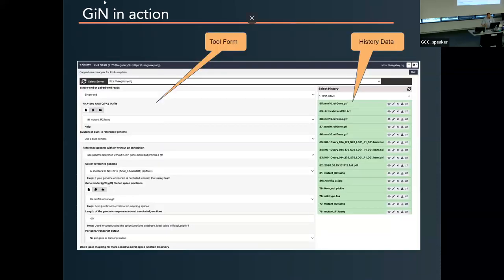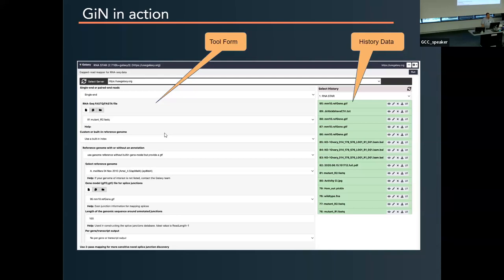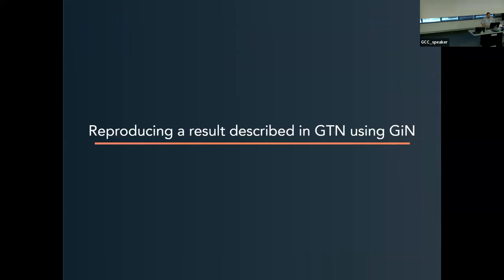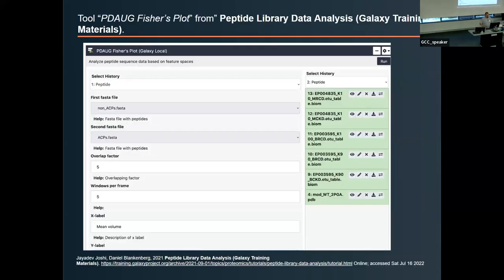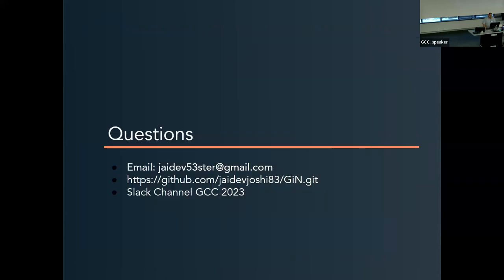Once you click on a tool, a new cell will appear inside the Jupyter Notebook itself. We have a very similar-looking tool form inside of Galaxy. We have our histories, we can switch between histories, configure our tools, drag and drop between our history and the Galaxy tool inside of Jupyter Notebook, and run those tools directly from within the notebook interface.